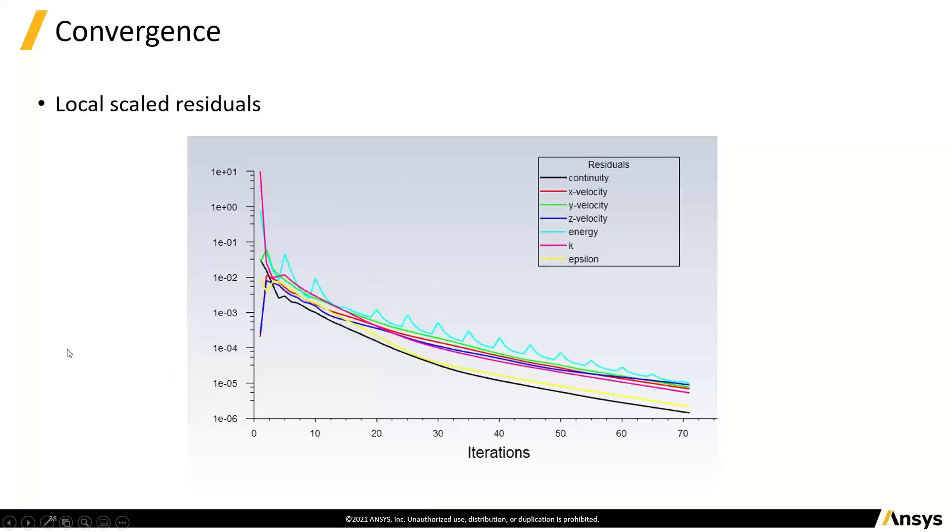So if we solve the flow with localized scaled residuals, the flow converges down really nicely. Obviously, the energy equation is very lumpy to start with because we're making adjustments which throw the residuals off. But as we get closer and closer to convergence, those adjustments are getting smaller, particularly as this height might be constant, but it's on a log scale. So it's actually getting smaller and smaller.